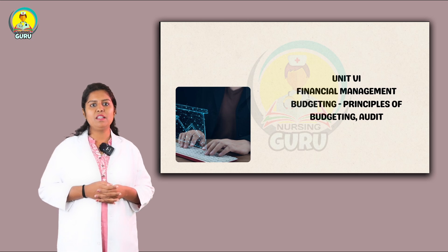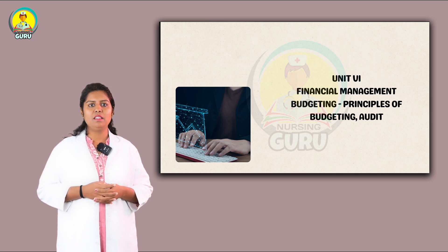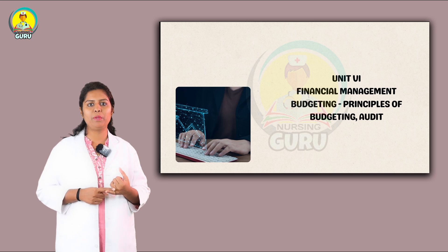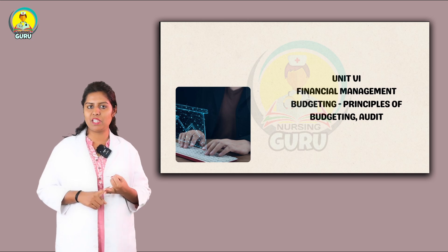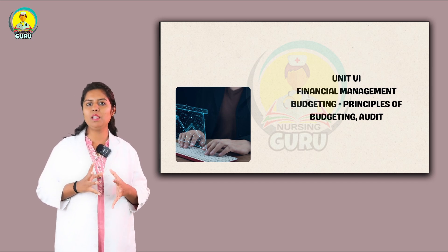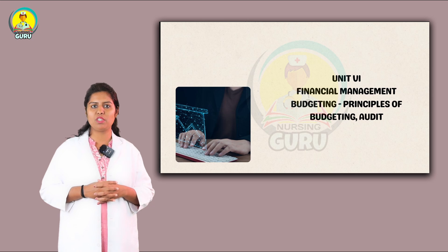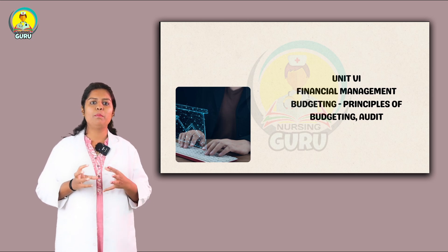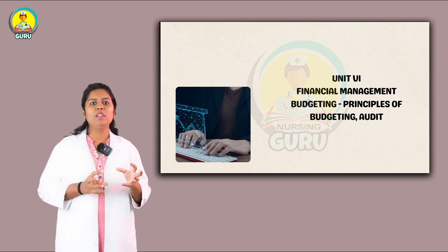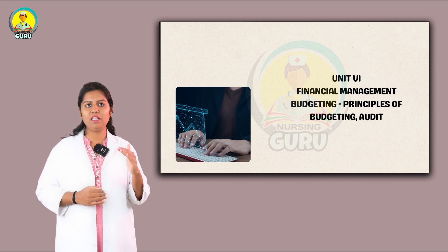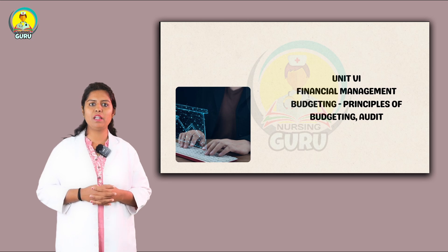Next is Unit 6: Financial Management. Under this we have budgeting, principles of budgeting, and audit. Audit is very important, and budgeting is also an important question. They may ask you to prepare a budget for a college or for a hospital, and you need to explain everything under that. It is a 10-mark question.